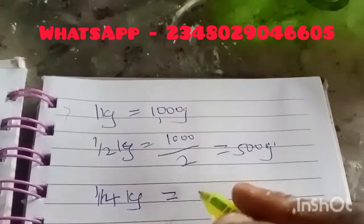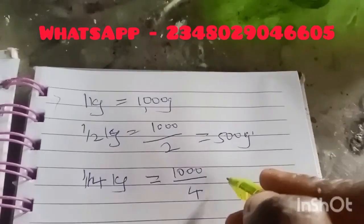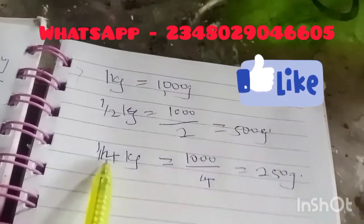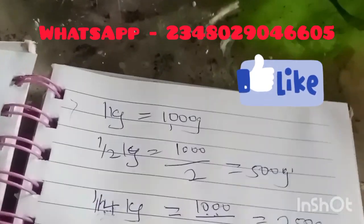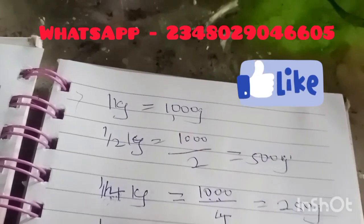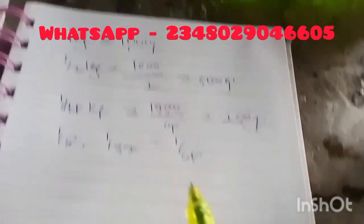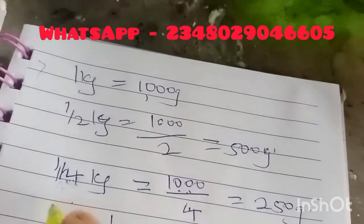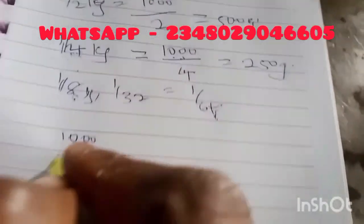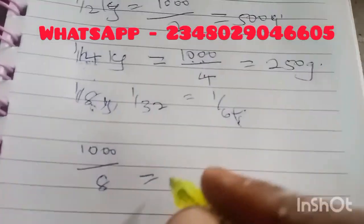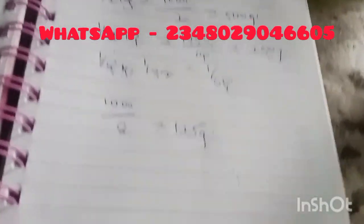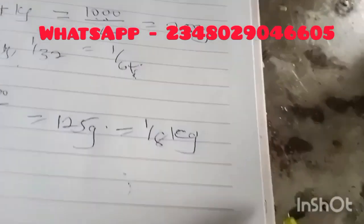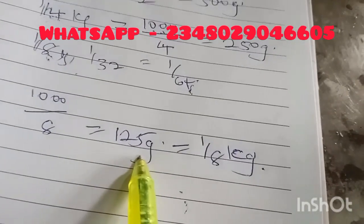One-quarter kg equals 1000 divided by 4, which gives 250 grams. To convert kg to grams, just divide 1000 by the figure you have in the denominator. So one-eighth kg equals 1000 divided by 8, which gives 125 grams. If someone writes that your measurement should be one-eighth kg, just know they are saying the same thing as 125 grams.